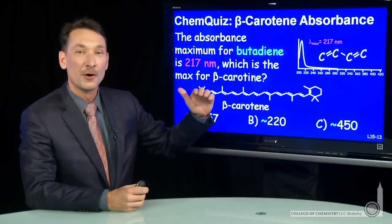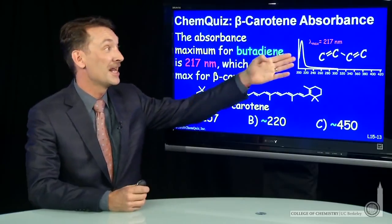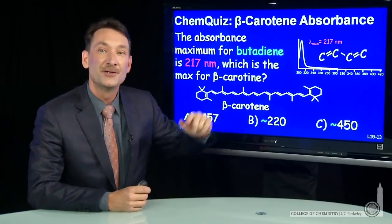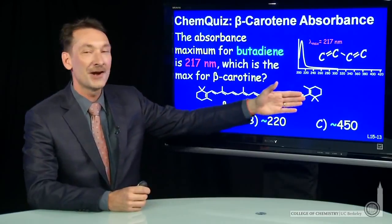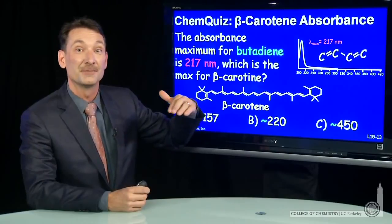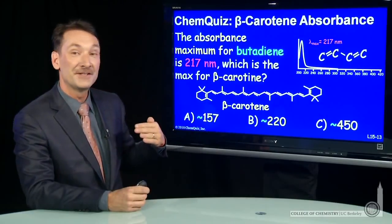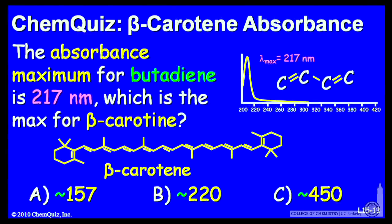Let's look at the ultraviolet absorbance of butadiene. It's a pi to pi star transition, and it has an absorbance maximum at 217 nanometers. The question I have for you: if you look at beta-carotene, can you predict the beta-carotene maximum absorbance? Would it be at 157 nanometers, 220, or 450? Think about that for a minute and make a selection.